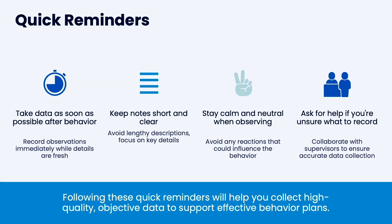Reminders when engaged in FBA with your supervisor: record observations immediately while details are fresh — don't try to do it later, it doesn't work. Keep your notes short and clear; avoid lengthy descriptions, focus on key details. Be calm and neutral — you're not engaging, not changing anything, not interacting with the student. You're only observing. Even if it's fairly severe behavior, always keep everybody safe, but it's better if you can avoid involving yourself and see how the family has always dealt with it. You want to know what's been going on for that behavior in the past. Ask for help if you're unsure and always collaborate with your supervisor.